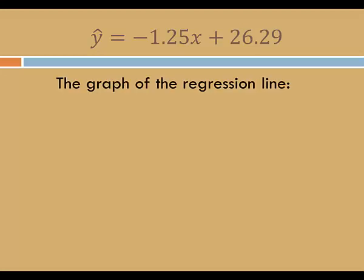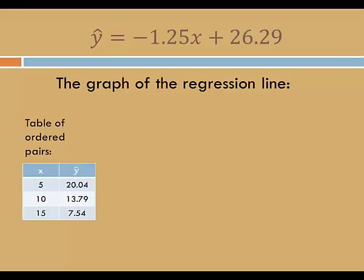It'd be nice if we had a graph of the regression line. We'll start with a table of ordered pairs. I'll pick values of x, such as 5, 10, and 15. I'll plug each one into the equation and look for the output.